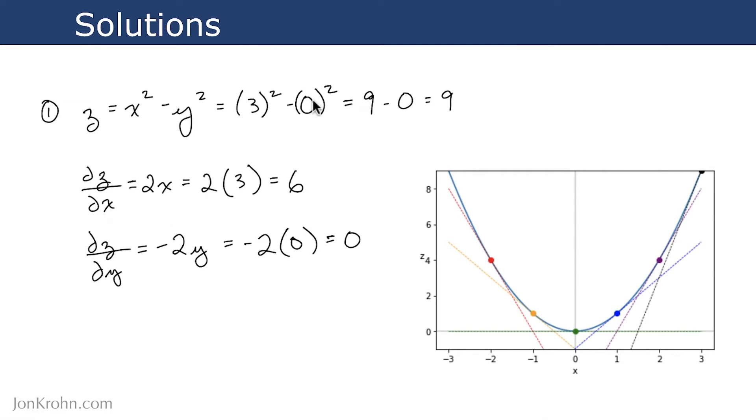So where x is equal to 3 and y is equal to 0, our core function, our multivariate function, gives us a z value of 9. The slope of z with respect to x is 6, and the slope of z with respect to y is 0. And I've added this point where x is equal to 3 and y is equal to 0 onto a chart that we created earlier in the slides, and we can see that at that point z is equal to 9, and our slope is steeper than ever. It's equal to 6.